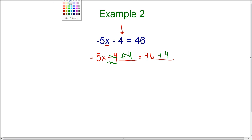So on the left hand side, I'm left with negative 5x. And on the right hand side, I now have 46 plus 4, which is 50.